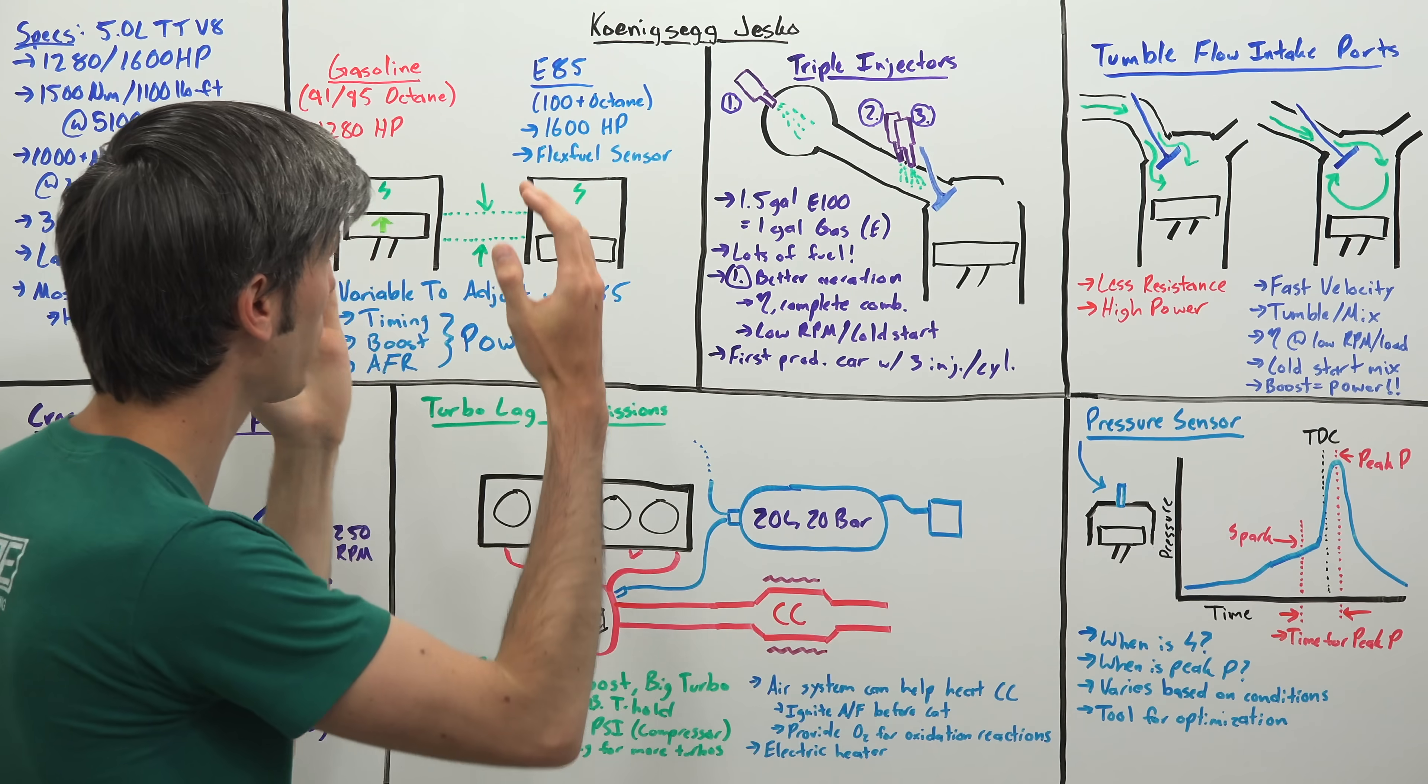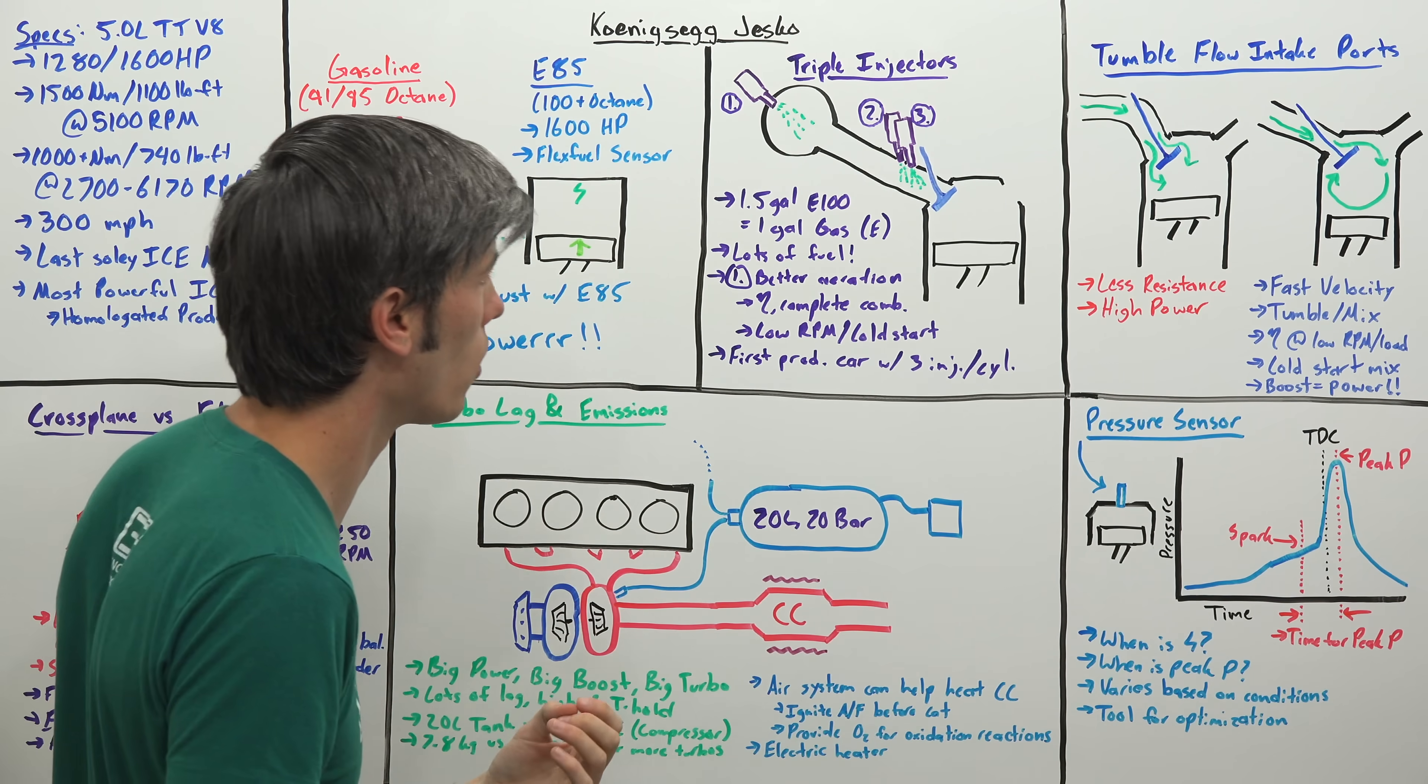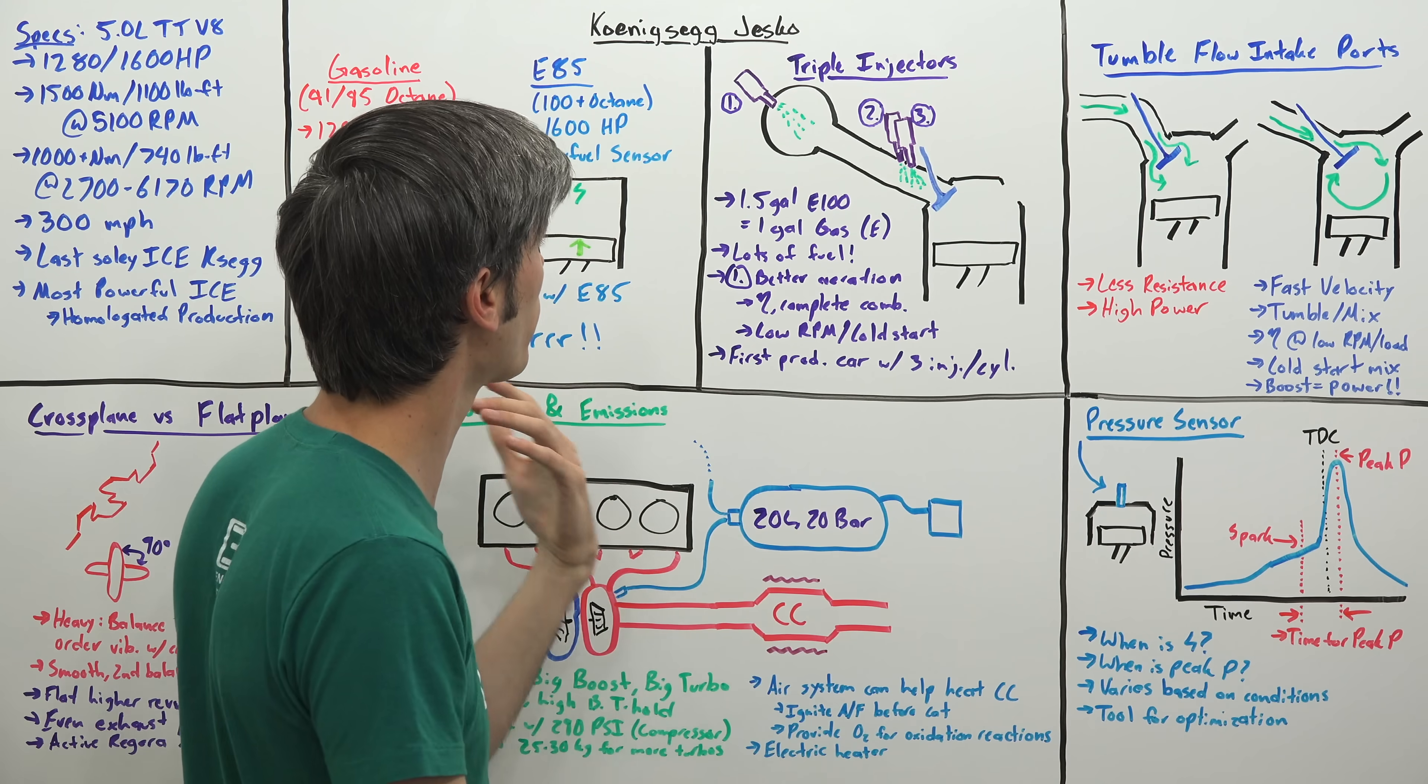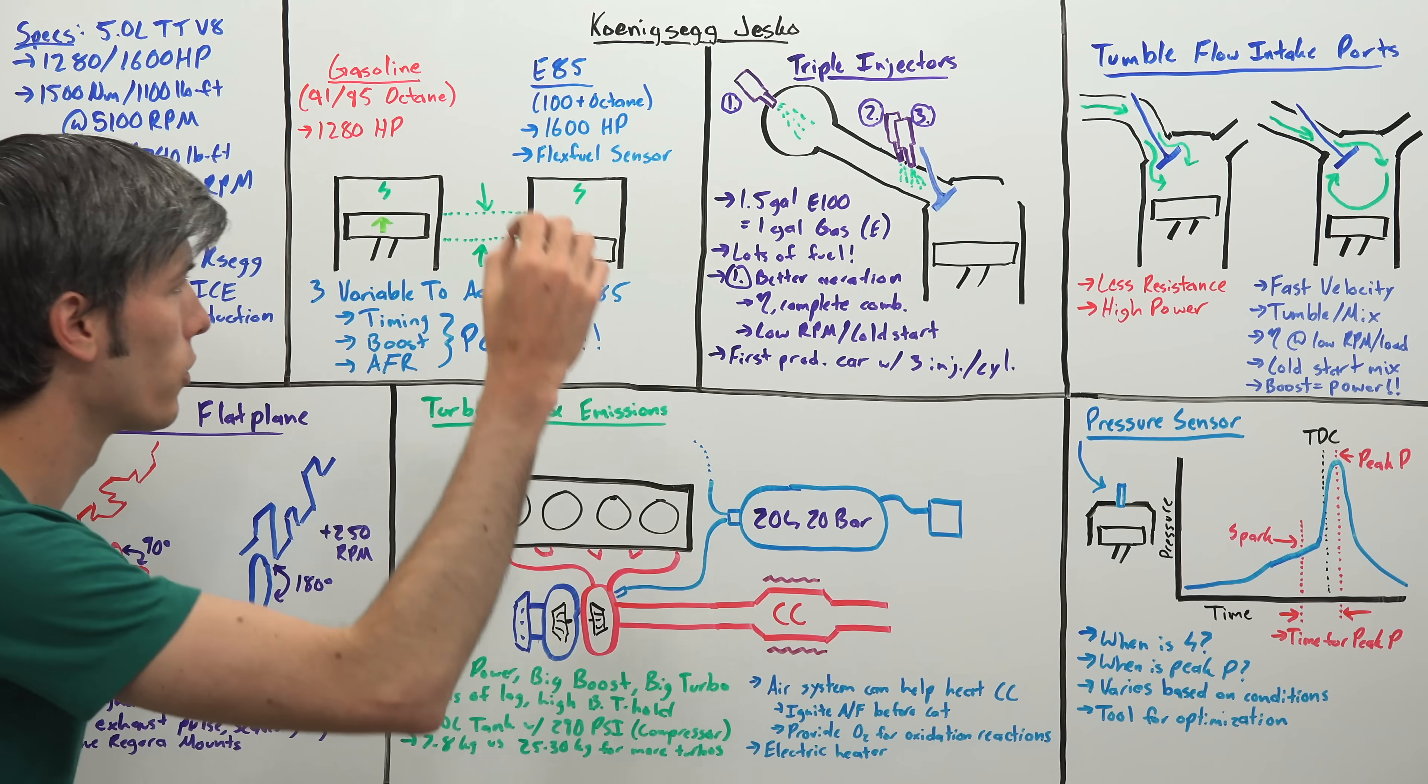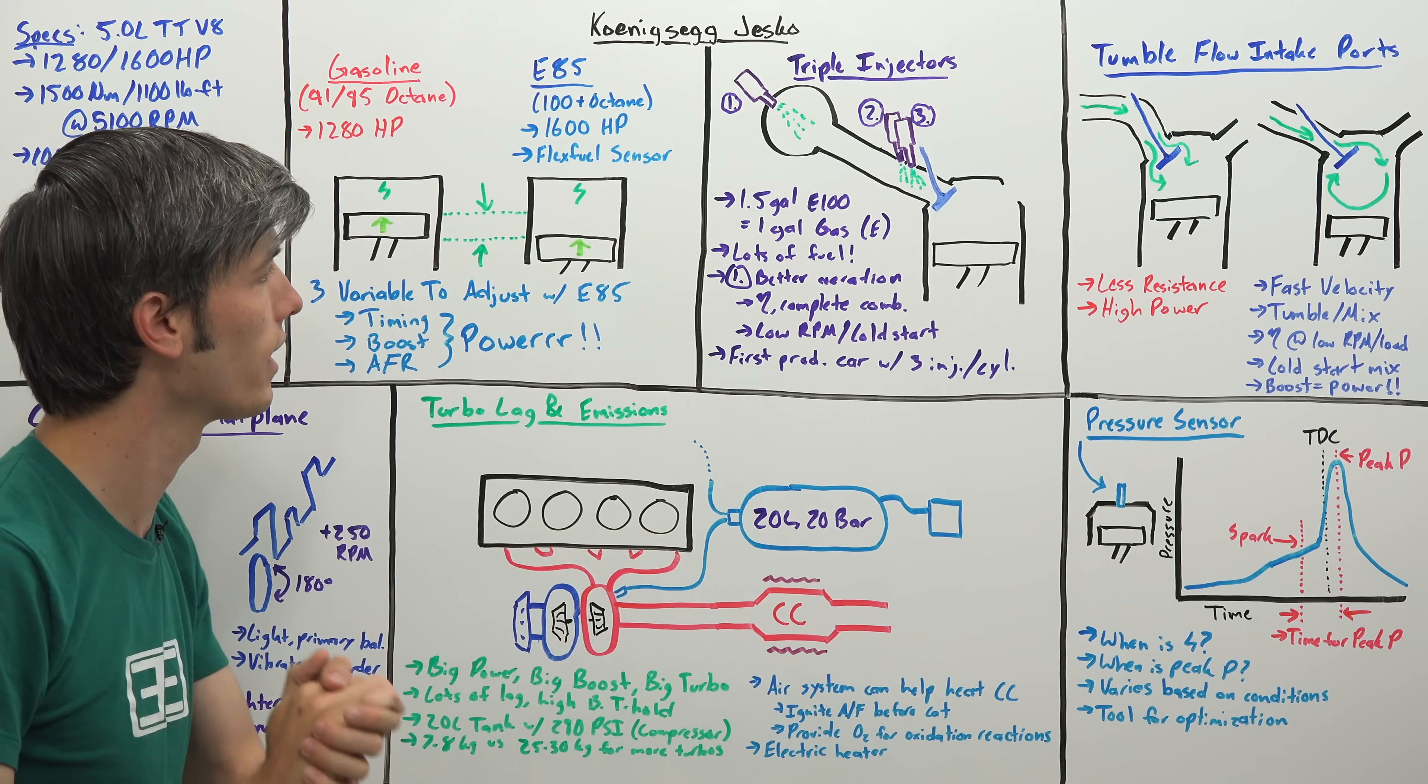E85 is less energy dense, so pure ethanol, 1.5 gallons of pure ethanol is the energy equivalent to one gallon of gasoline. We need quite a bit more fuel in order to produce the same amount of power. That means we're dumping loads of fuel into this engine when we're running on E85 and creating 1600 horsepower.